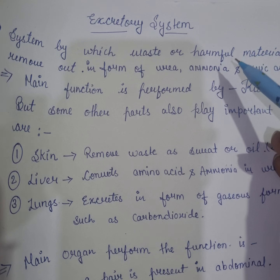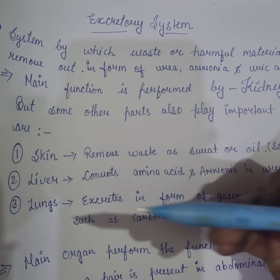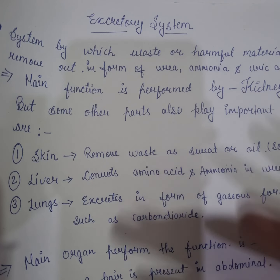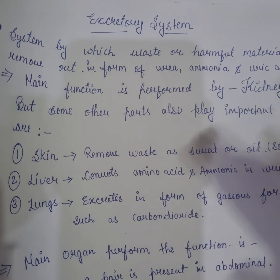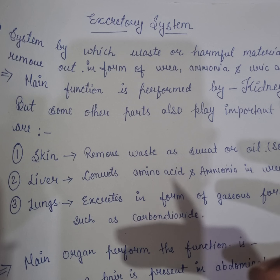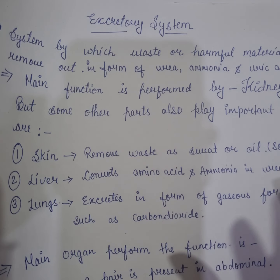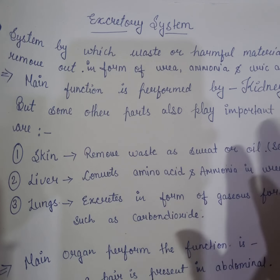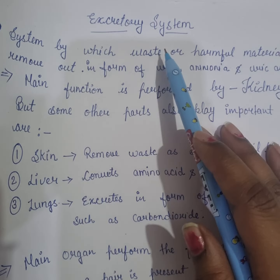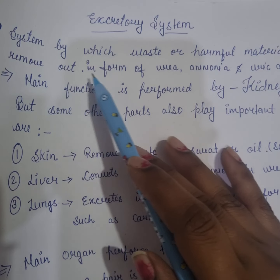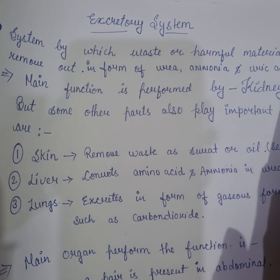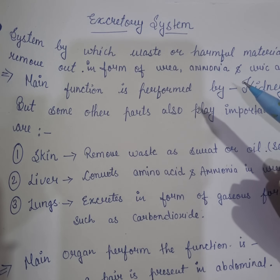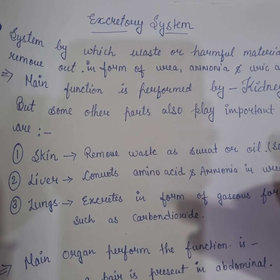Excretory system is related to excretion. Excretion means to remove waste outside the body. When we talk about our systems, we have many substances that are harmful or useless, so we cannot keep them in the body. The system by which waste and harmful materials are removed out in the form of urea, ammonia, and uric acid — these are excretory products which are removed from our body.